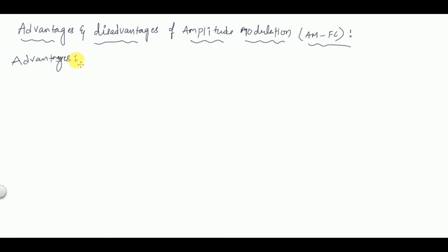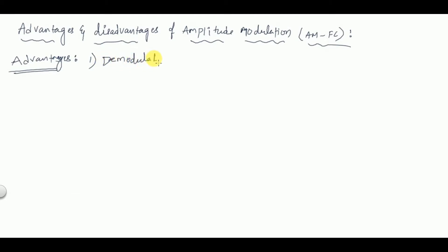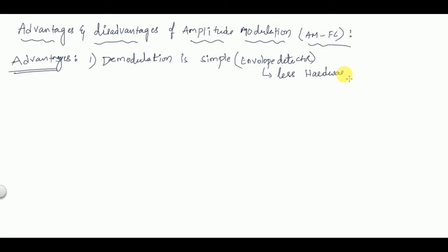The first advantage of AM modulation is that demodulation is simple. For demodulation we use an envelope detector, which requires less hardware and is easy to construct. So due to this, demodulation is very simple.